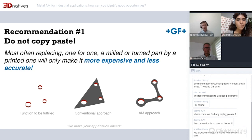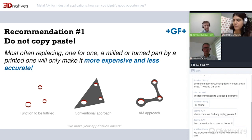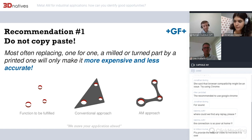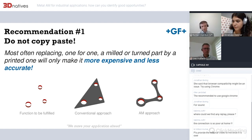Our first recommendation: do not copy and paste. Most often if you try to replace a milled or turned part one-for-one with an additive part, it will only make it more expensive and less accurate. There must be a will to reevaluate and challenge the established process. It is insufficient to look at additive manufacturing only as a manufacturing operation, as the highest added value will result from a holistic approach. The question to ask is not 'how to produce this geometry' but 'what are the requirements of the part or assembly.'